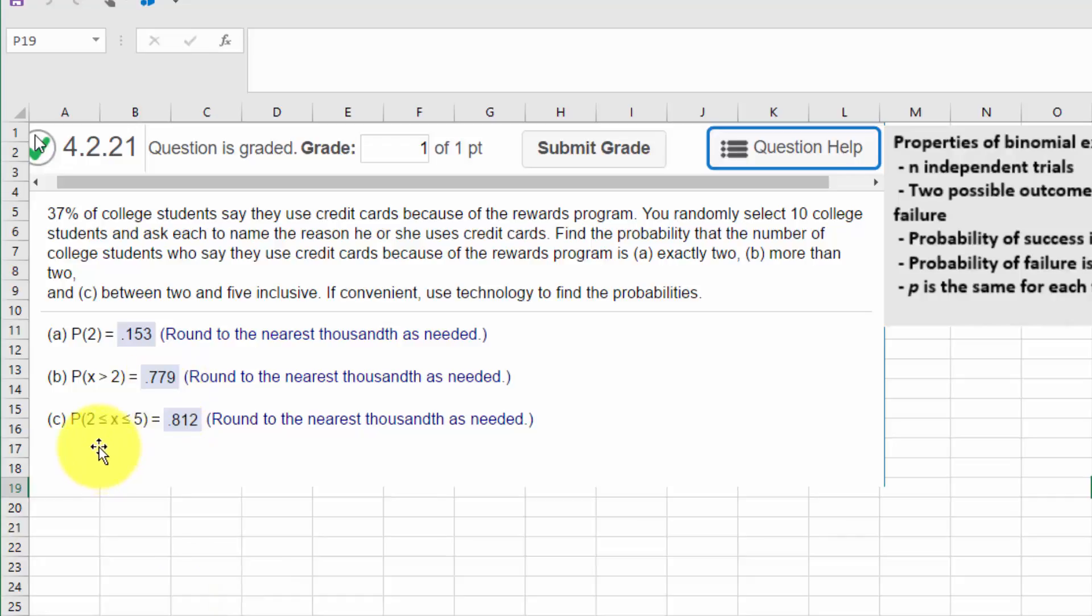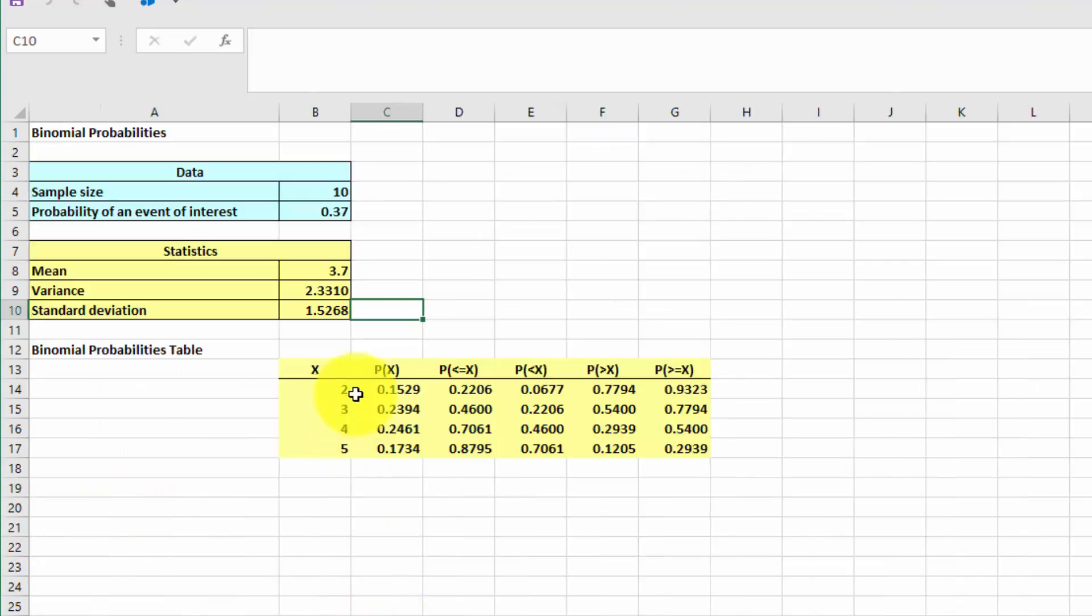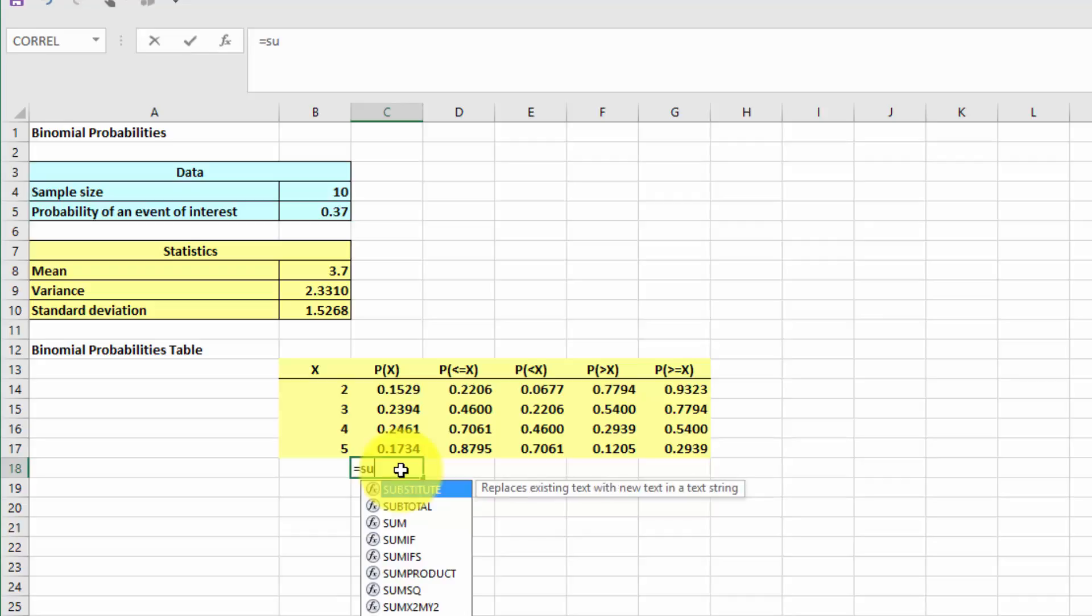The last is inclusive from 2 to 5. Go back here to our table. We've got our values of each of the individual outcomes: 2, 3, 4, 5. And to get the total probability inclusive from 2 to 5, let's just go equals sum. And I'm going to add up those four probabilities.